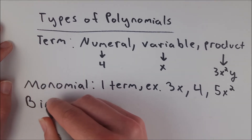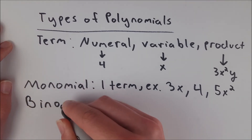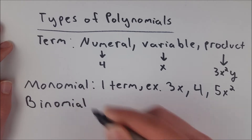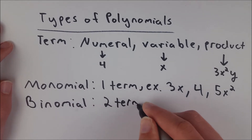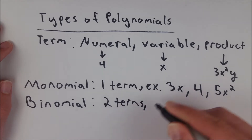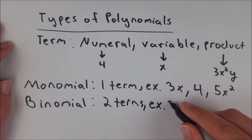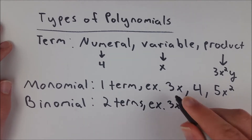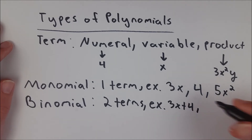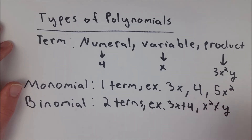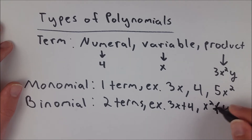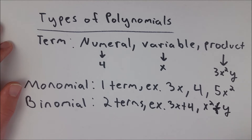Next, we've got binomials, which as you might expect, are polynomials that have two terms. Some examples of binomials would be 3x + 4, adding our first two monomials, or we could have x² + y — that would also be a binomial. That's x squared plus y — sorry, the addition sign looked really bad there.